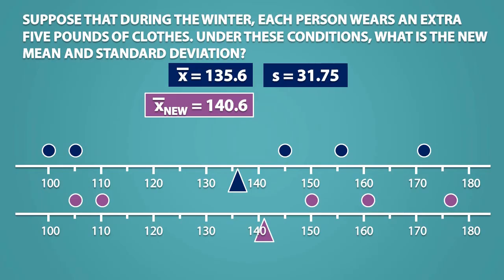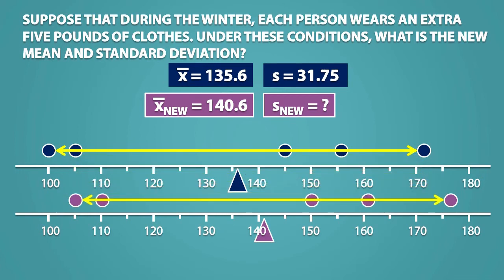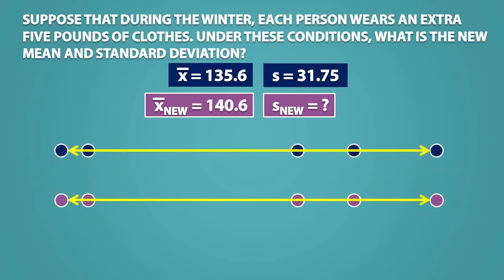Now let's see what happens when we try to determine the new standard deviation. Instead of using the formula, we can also think about this conceptually. The standard deviation is a measure of spread for the dataset. By adding 5 pounds to each data point, we see that the spread for the new dataset hasn't changed. So the spread for both distributions are the same, and as a result, the new standard deviation is equal to the original standard deviation.